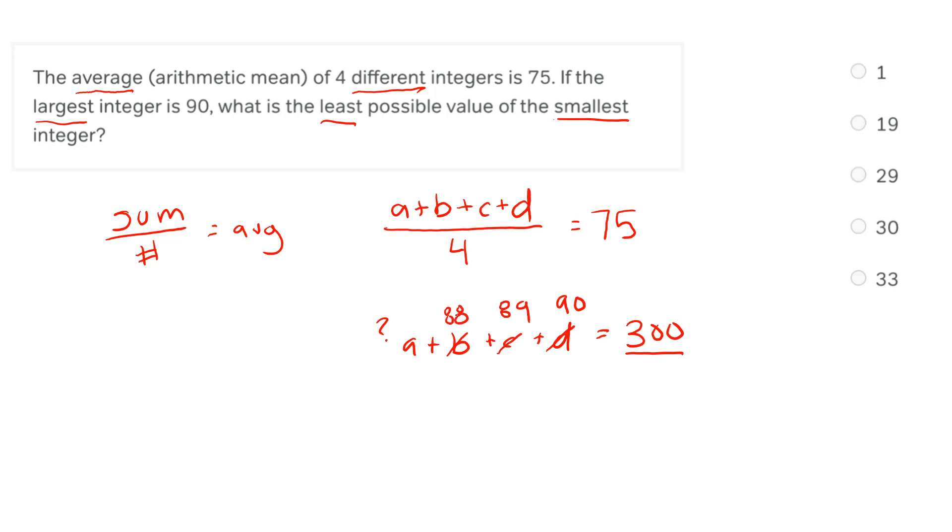Now we can manipulate and solve. Alright. Adding these numbers up, the trick that I'm going to use is to add together three nineties and then subtract three. And that's going to give me a plus 267. Alright. Equals 300. And then I'm going to subtract 267 from both sides. And that gives me a equals 33 or e. Now notice here, if we had put in nineties for b and c, we would have gotten answer choice d.